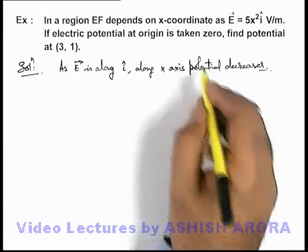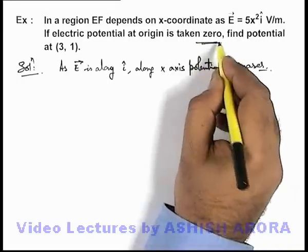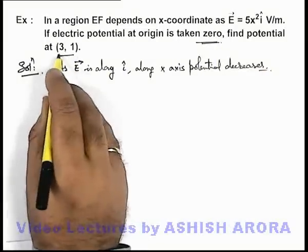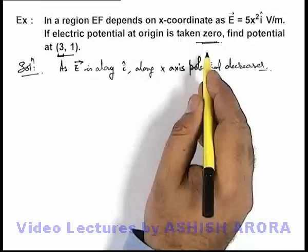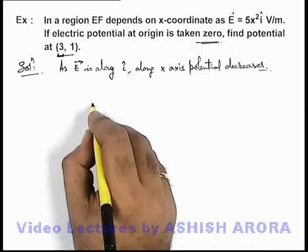So if potential at origin is taken to be zero, then at a point P which is located at x equal to 3 meter, certainly potential will be less than zero. So we can write that.